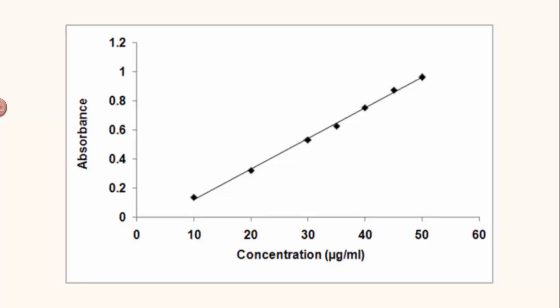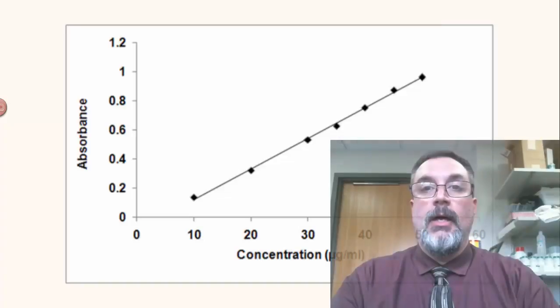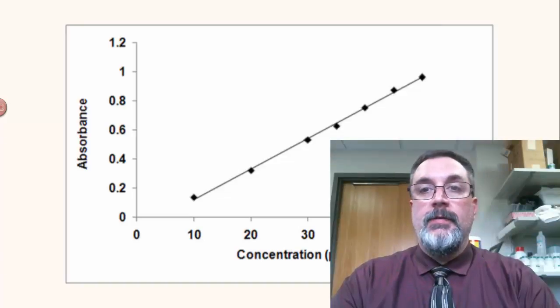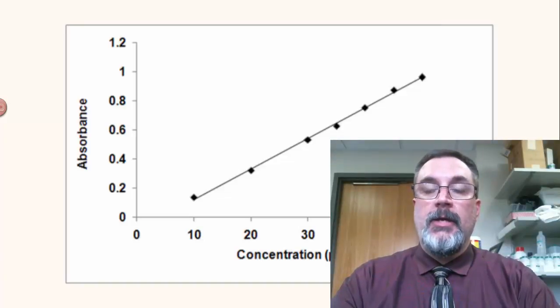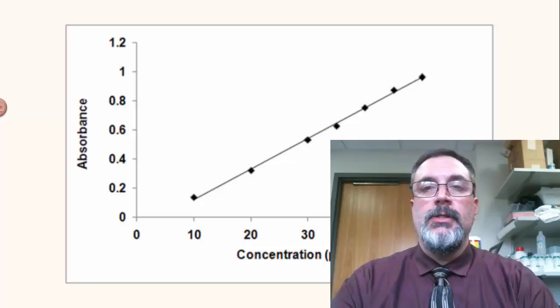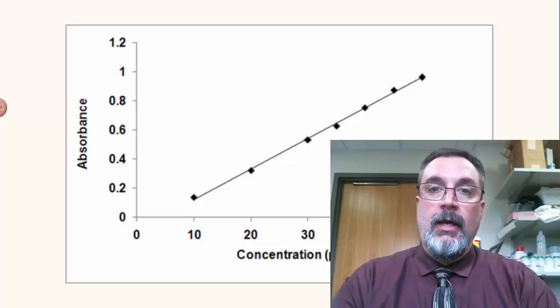Now you can take a solution of unknown concentration and just plug it into the equation and figure out its concentration based on this calibration curve, which is what we're going to do in lab over the next few days. So that's about it. It's not a very difficult law to use, but it's very useful, especially when dealing with colored solutions that absorb light. You can find the concentration of a solution very easily.